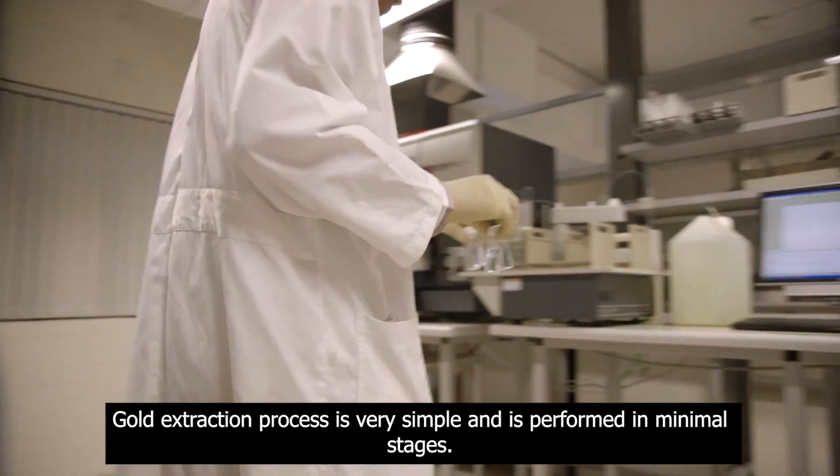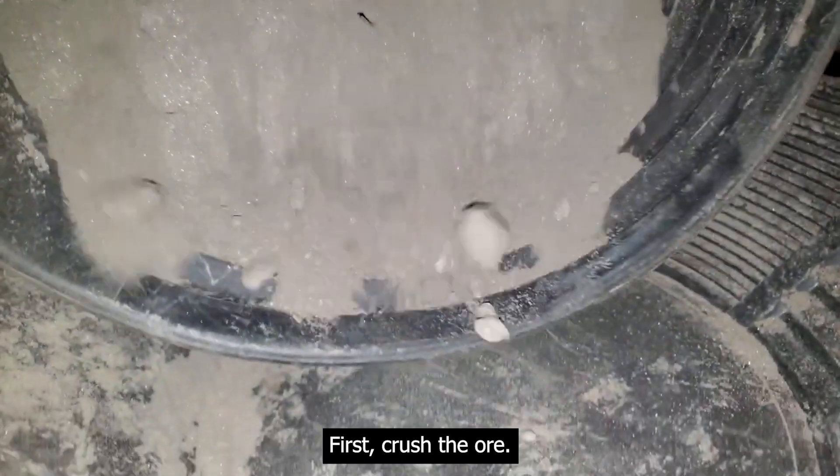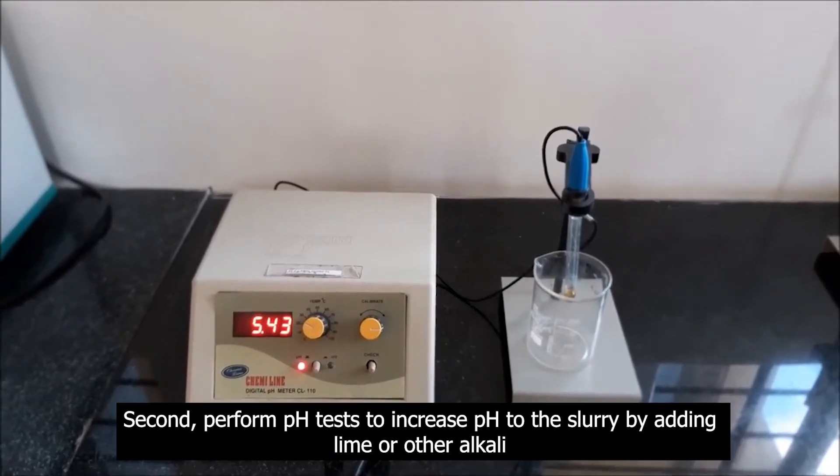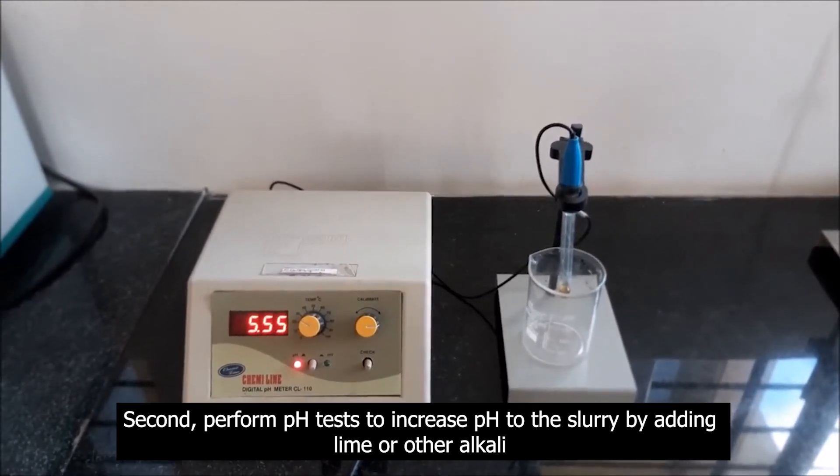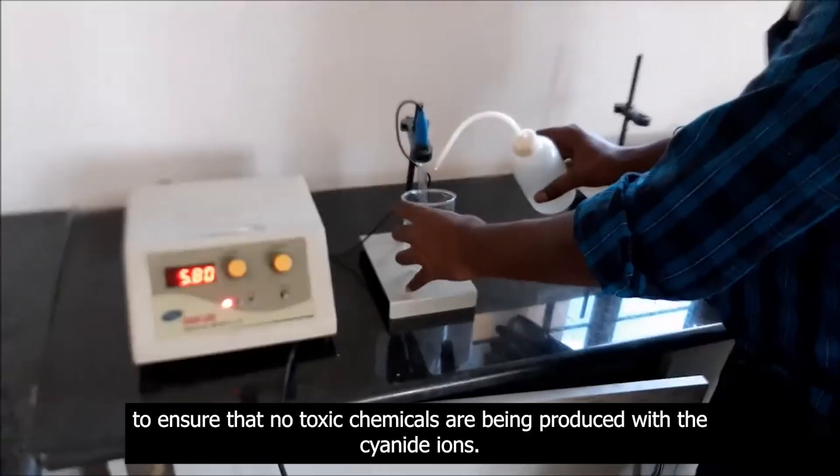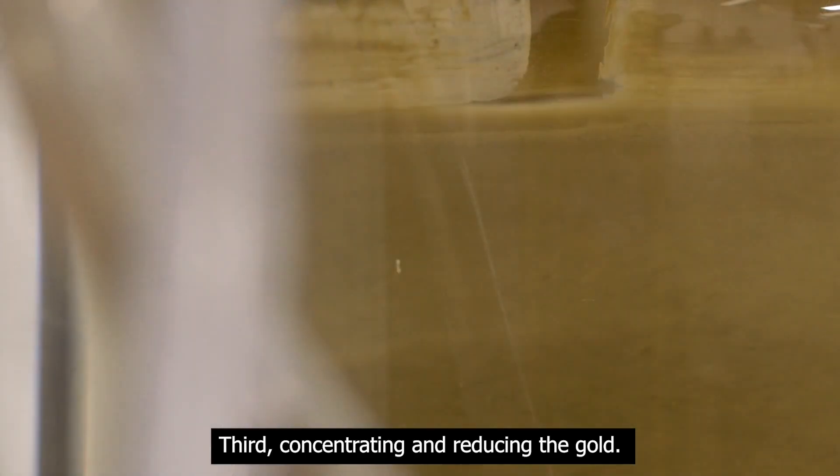Gold extraction process is very simple and is performed in minimal stages. First, crush the ore. Second, perform pH tests to increase pH to the slurry by adding lime or other alkaline to ensure that no toxic chemicals are being produced with the cyanide ions.